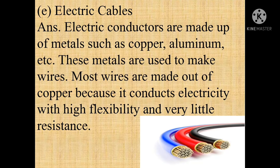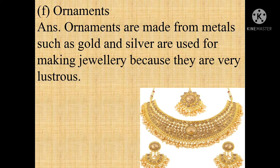E) Electric cables. Answer: Electric conductors are made up of metals such as copper, aluminum, etc. These metals are used to make wires. Most wires are made out of copper because it conducts electricity with high flexibility and very low resistance. F) Ornaments. Answer: Ornaments are made from metals such as gold and silver, which are used for making jewelry because they are very lustrous.